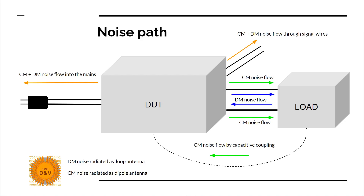Noise path. This is the same diagram used in the video about conducted emission test part one. We have our device under test and a load — for example a driver and a motor, or a driver and a display. You can see that our noise — common mode and differential mode — flows into the mains and also through our signal lines and between our DUT and our load. Common mode noise flows on both cables in the same direction, but differential mode noise flows on our plus cable and minus return cable together with our normal current flow.